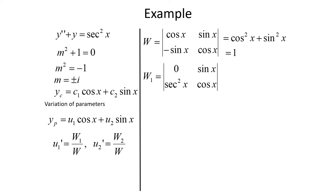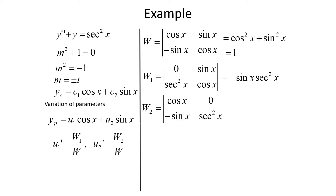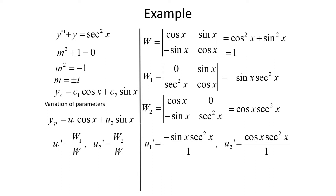To find W1, we replace the first column with 0 and sec²(x). Computing the determinant: 0·cos(x) = 0, minus sin(x)·sec²(x), giving W1 = -sin(x)·sec²(x). For W2, we replace the second column with 0 and sec²(x), so cos(x)·sec²(x) minus (-sin(x))·0 = cos(x)·sec²(x). Now u1' = W1/W = -sin(x)·sec²(x)/1, and u2' = W2/W = cos(x)·sec²(x)/1.